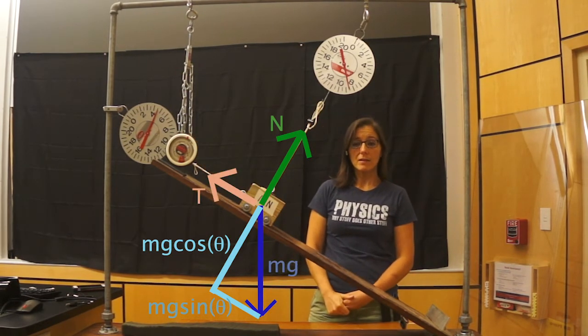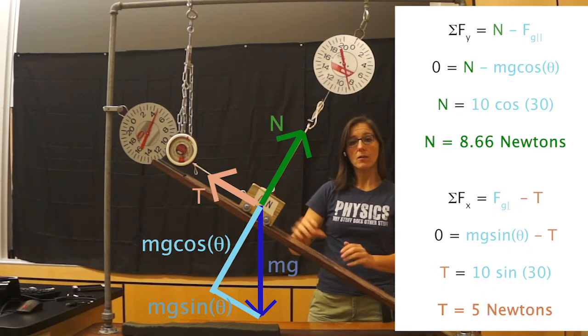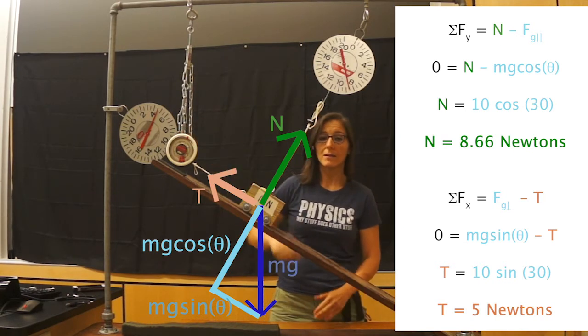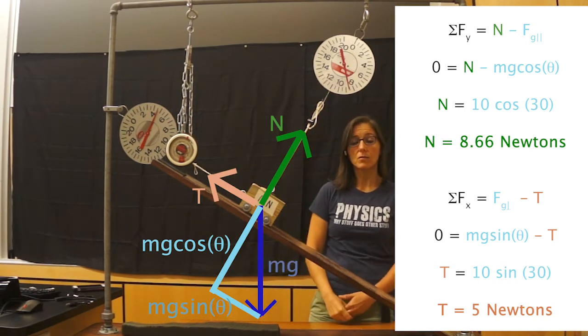If we take a look at these scales and we do the math for a 10 Newton object resting on a 30 degree incline, we can actually see that the readings on the scales match with what we would expect.